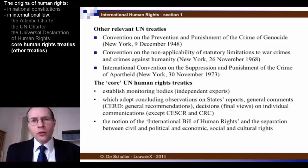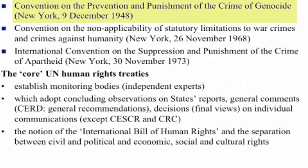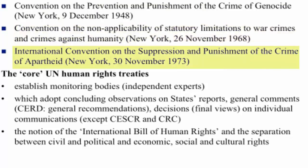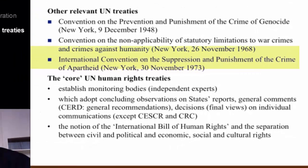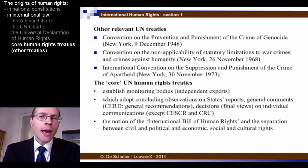Within the UN there are other instruments relevant to human rights — for example, the 1948 Convention on the Prevention and Punishment of the Crime of Genocide, the Convention on the Non-Applicability of Statutory Limitations to War Crimes and Crimes Against Humanity, and the International Convention on the Suppression and Punishment of the Crime of Apartheid adopted in 1973. But the nine core UN human rights treaties remain the most important instruments, and these are the instruments on which this course shall mostly be focused.